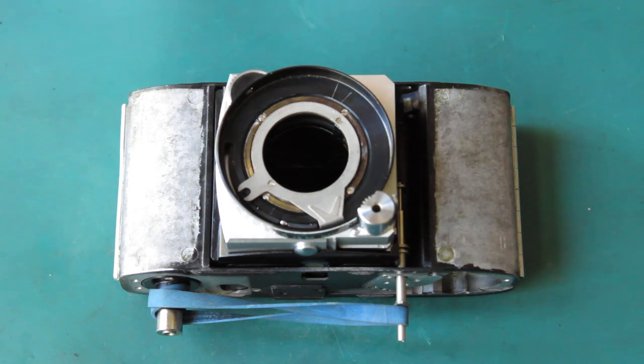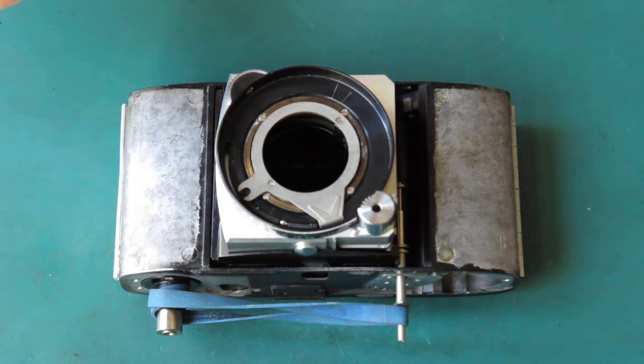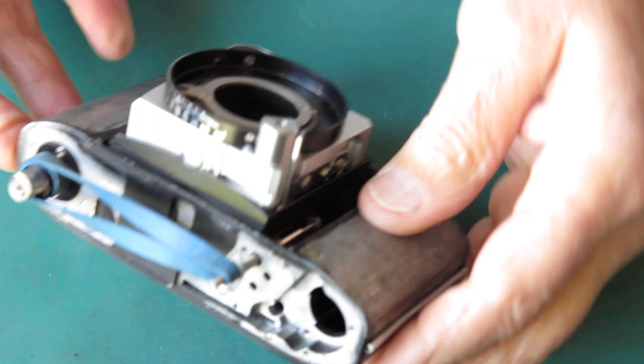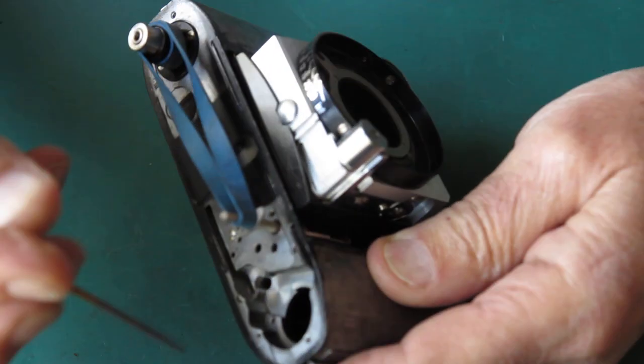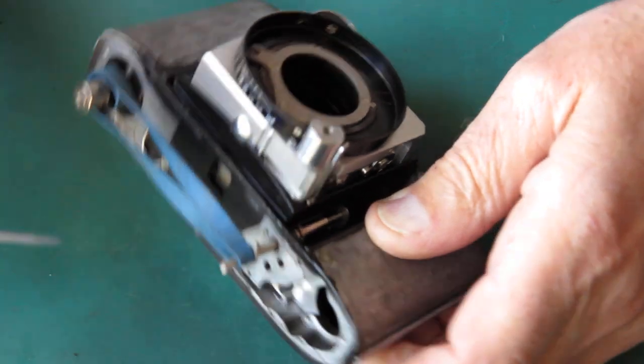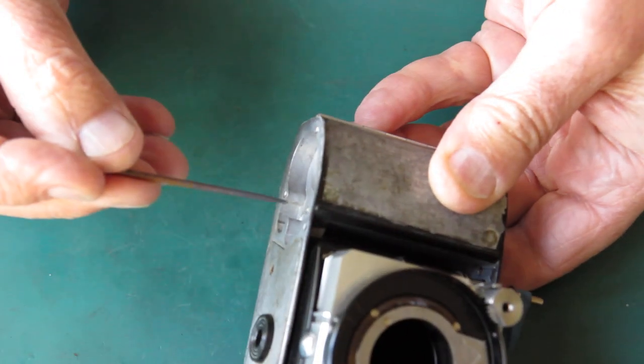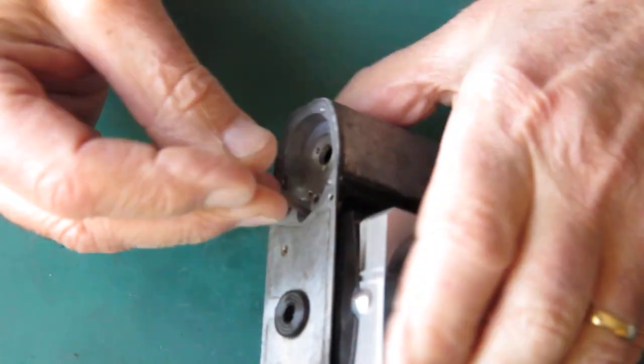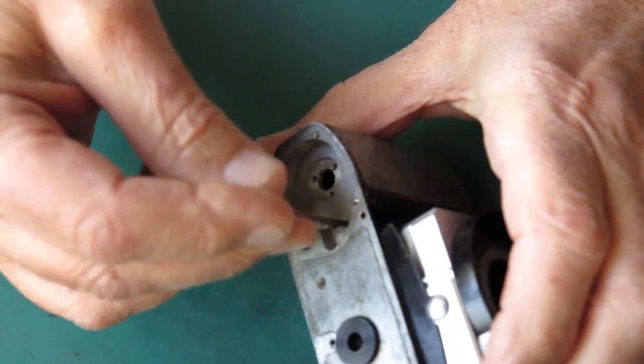To continue with the reassembly, I'll start putting the film advance components back into the body. I'll start with the release lever and lock lever. Taking some molybdenum paste, running it through the holes in the casting, top and bottom, where those levers pass.